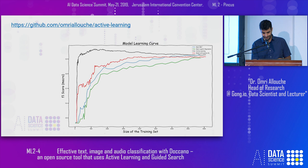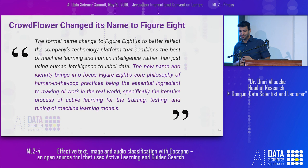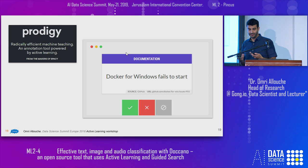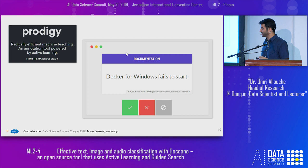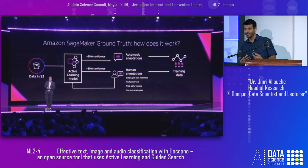This shift is happening in many different companies nowadays. CrowdFlower recently changed its name to Figure 8, saying that the new name brings into focus their core philosophy of human-in-the-loop practices being the essential ingredient to make AI work in the real world, especially the iterative process of active learning. The creators of spaCy, the leading NLP package, created Prodigy, a paid commercial suite for creating models based on active learning.